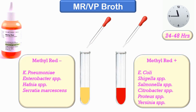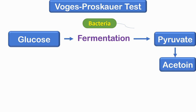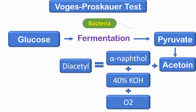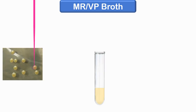Next is the Voges-Proskauer or VP test. Some bacteria metabolize pyruvic acid into the acetoin compound as the chief end product of glucose metabolism. They do not form stable acids and therefore have a negative MR test. In the presence of atmospheric oxygen, 40% potassium hydroxide, and 5% alpha-naphthol, this acetoin is converted to diacetyl. The guanidino group present in the MRVP broth under alkaline conditions reacts with the diacetyl to form a pinkish-red colored complex.